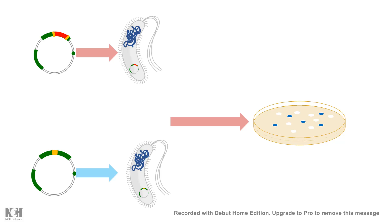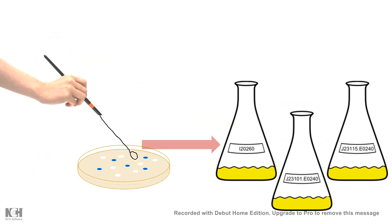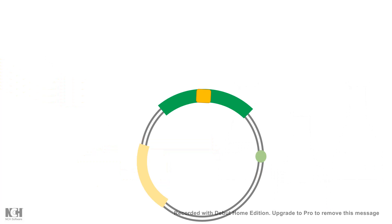In those white colonies, the marker gene is disrupted by our gene of interest — so the white colonies are the ones we want. This is how using a screenable marker we can screen for recombinant colonies. Once identified, we scrape the white colonies and grow them in bulk cultures for further downstream processes.